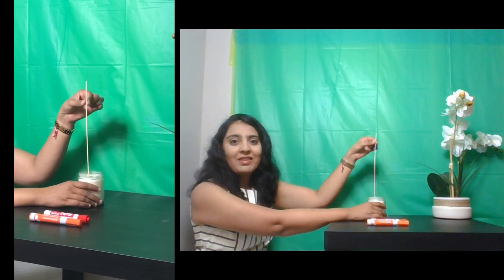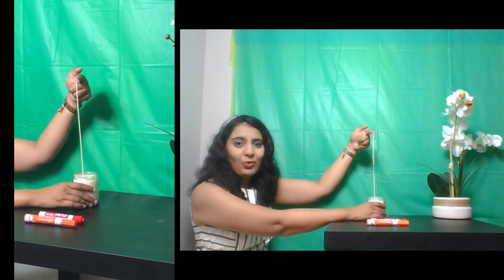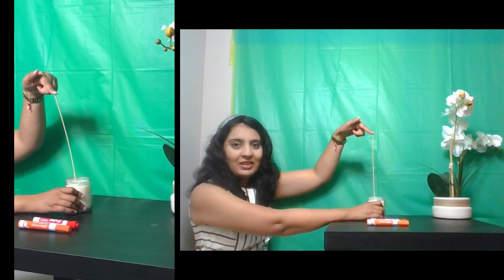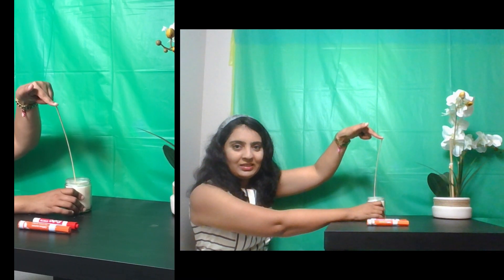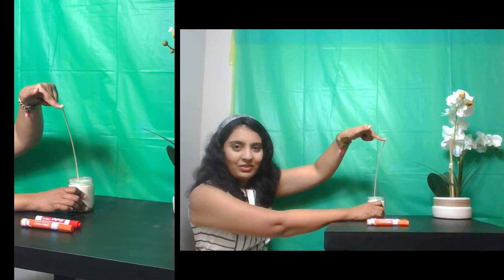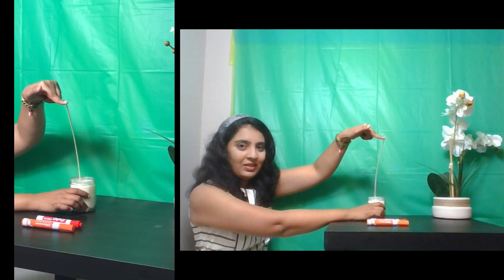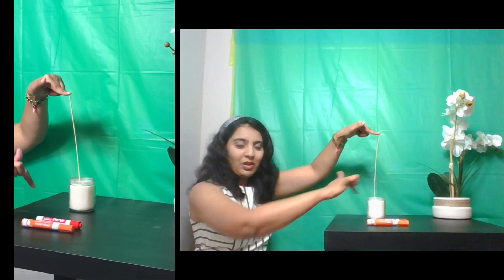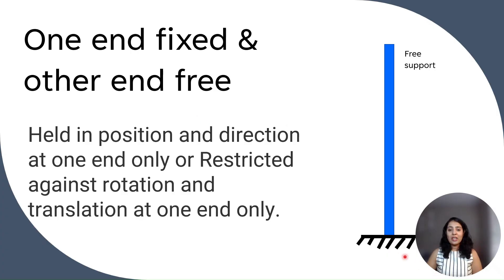That one end is fixed and other end is free. So we will keep this as it is, and we will just apply a load over here. Are you able to observe the shape? So it is curved, but that curve extends at the bottom also. So one end is fixed and other end is free.